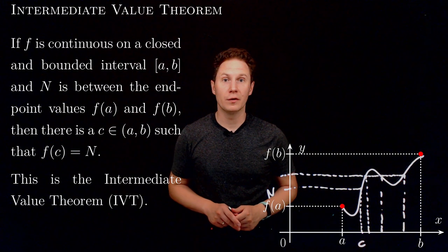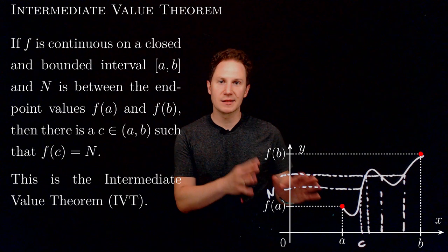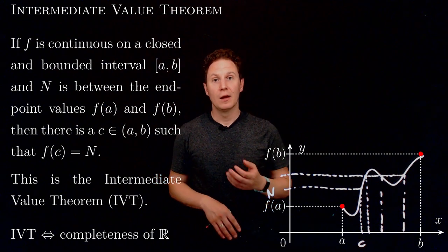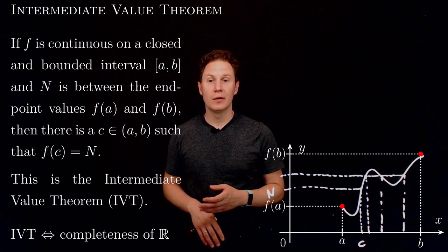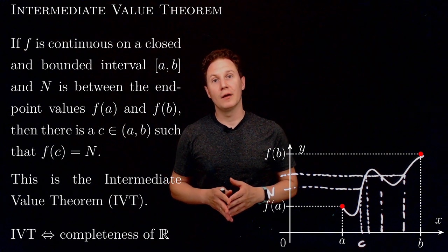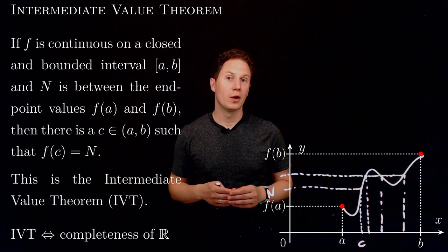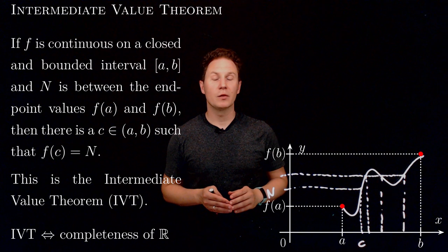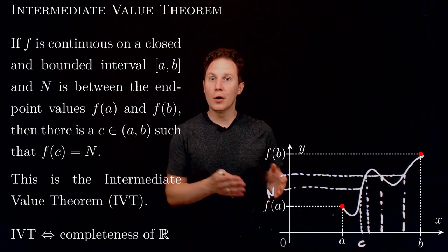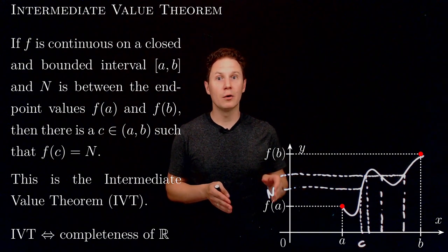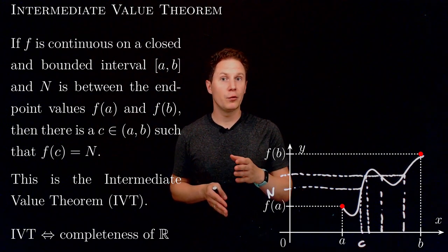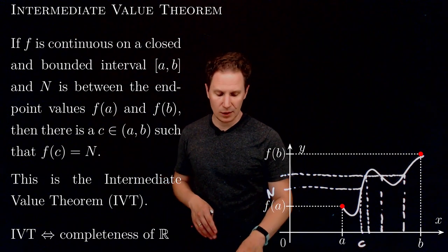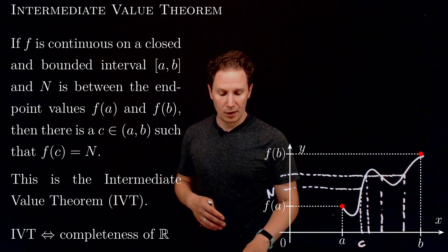The Intermediate Value Theorem, sometimes shortened to IVT, seems like a simple enough theorem, but this statement is actually equivalent to saying that the set of real numbers is complete. The completeness of the reals is roughly the fact that there are no gaps or holes between real numbers — the real number line is truly a continuum. Contrast that with the rational numbers, where there are holes separating them, filled by irrational numbers like the square root of two. So the IVT is a powerful result.